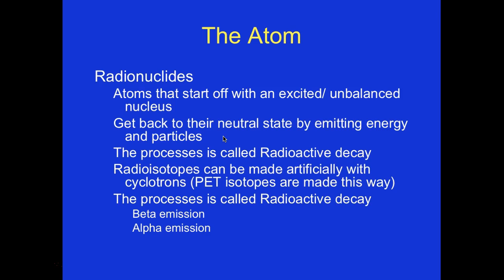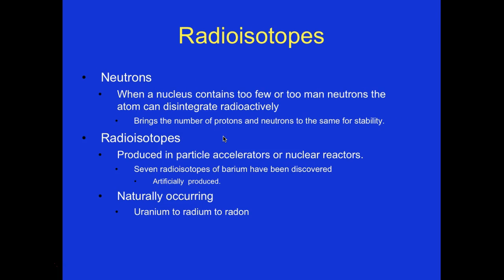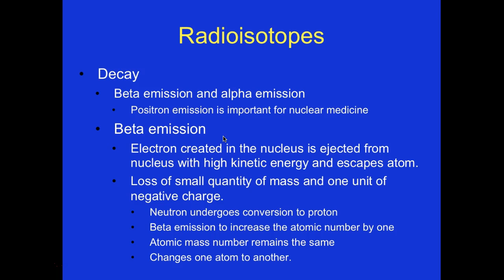Radioisotopes can be made artificially with cyclotrons — PET isotopes are made this way; when we do PET scans, that's where we get our isotopes. Radioisotopes are also produced in particle accelerators or nuclear reactors. Seven radioisotopes of barium have been discovered artificially. Naturally occurring decay goes from uranium to radium to radon — decaying step by step through that chain. Radioactive decay involves beta and alpha emissions; positron emission is important for nuclear medicine.